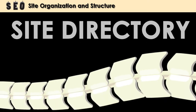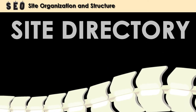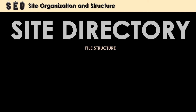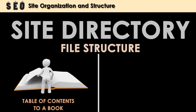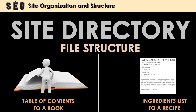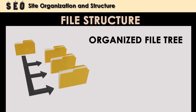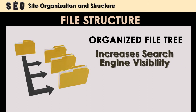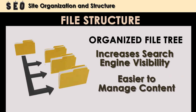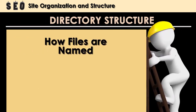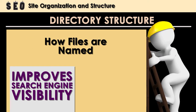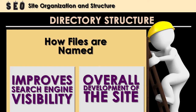The site directory is the backbone of good SEO. The directory is the site's file structure — sort of like what a table of contents would be to a book, or an ingredients list would be to a recipe. The directory should have a clean, organized file tree. When the nomenclature is logical and consistent, it's easy for web crawlers to recognize it, which increases the site's search engine visibility. This also makes it easier for the developer to manage new and existing content. Directory structure and how things are named within the site are important to search engine visibility and the overall development of the site.